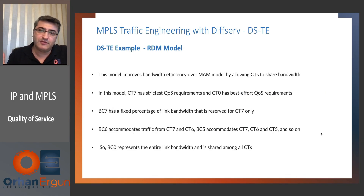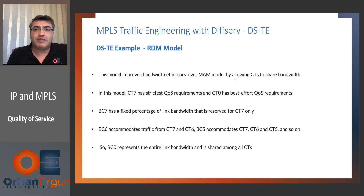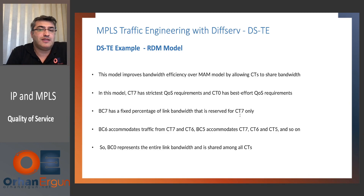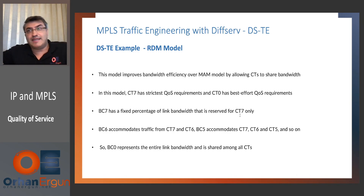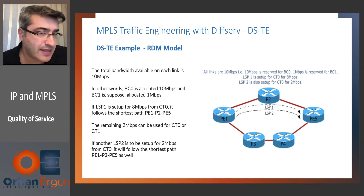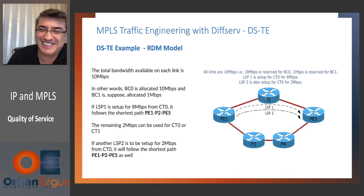Russian doll. Same example with a different bandwidth allocation model: Russian doll. This model improves bandwidth efficiency by allowing CTs to share bandwidth — you will see why. Bandwidth efficiency is good but not predictable — always a trade-off. In this model, CT7 has the strictest QoS requirement and CT0 has best-effort. BC7 has a fixed percentage of link bandwidth reserved for only CT7. BC6 accommodates CT6 and CT7, BC5 accommodates CT5 through CT7, and BC0 covers all CTs. Things will be very different and priorities need to come into the picture.